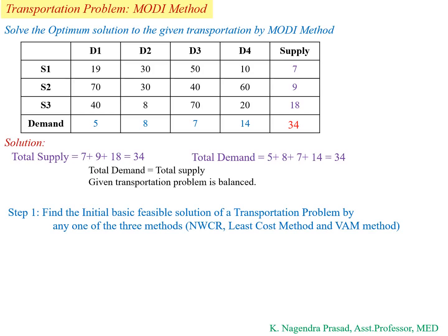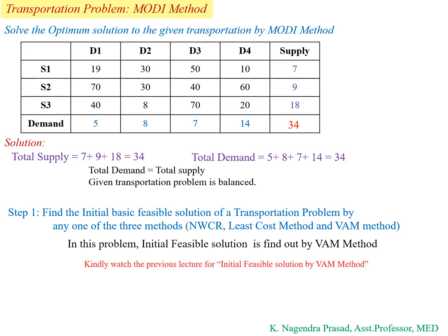Now we have to find the initial basic feasible solution by any of the following methods: the North West Corner method, the Least Cost method, or the VAM method. For this problem, we will find the initial basic feasible solution by the VAM method. Kindly refer to the previous video for the VAM method.